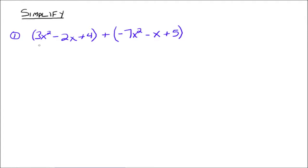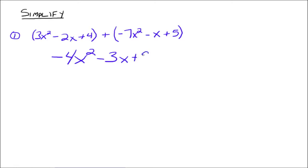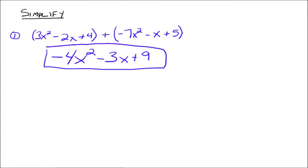Simplify. We have one polynomial, 3x squared minus 2x plus 4, plus a second polynomial, negative 7x squared minus x plus 5. We're going to add these two polynomials together by combining like terms. So 3x squared plus negative 7x squared goes to negative 4x squared. Negative 2x plus a negative x gives minus 3x. And 4 plus 5 gives us 9. This is the resultant polynomial when you add those first two polynomials together.